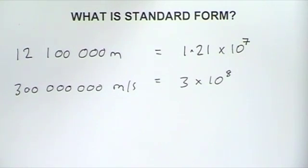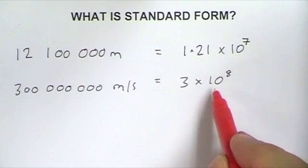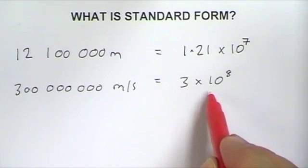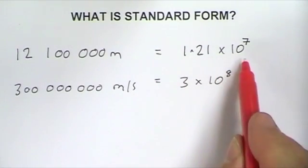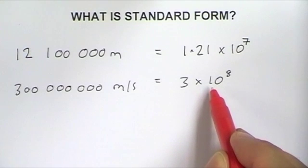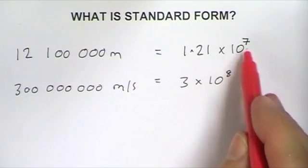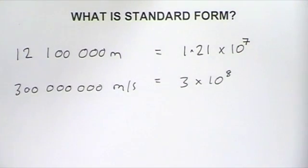Using the standard form method, it's very easy to see that the speed of light is actually bigger than the diameter of Venus. That's because the power of 10 is bigger for the speed of light than the power of 10 for Venus.